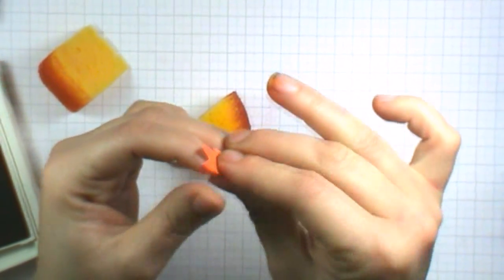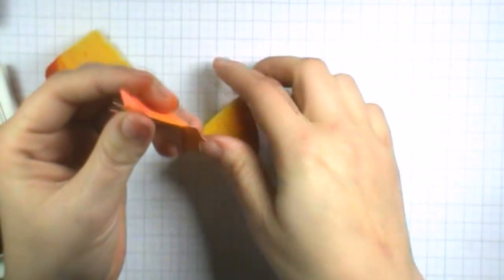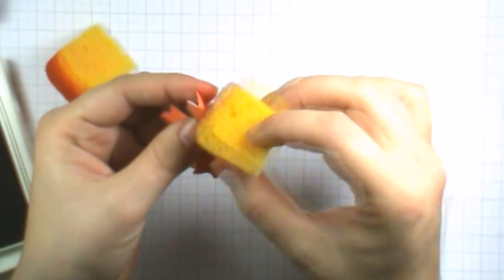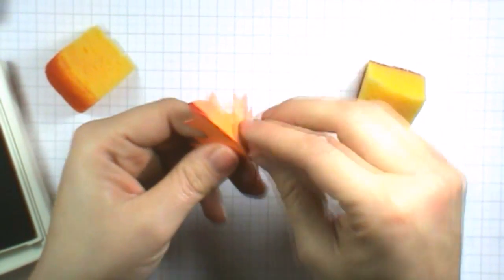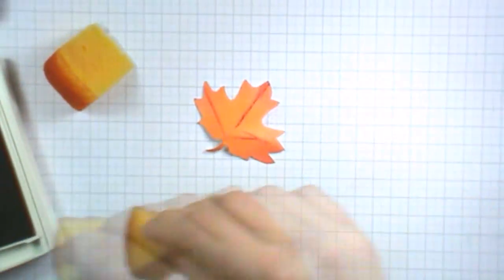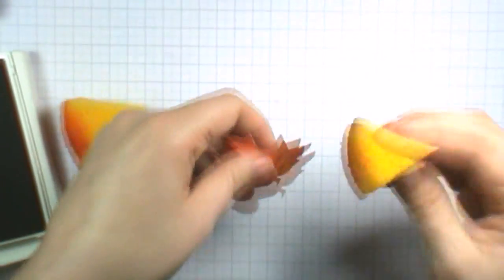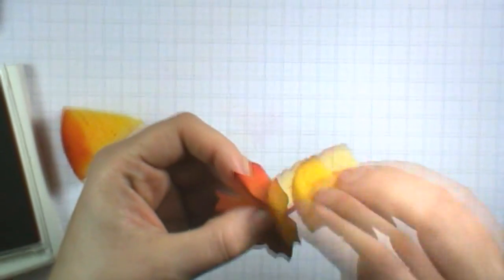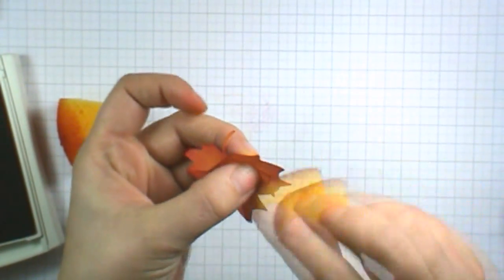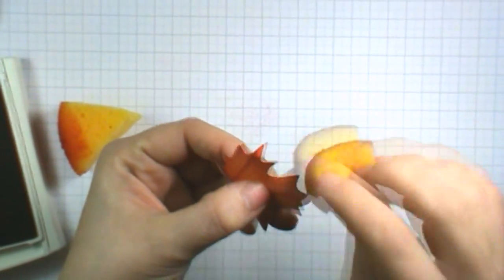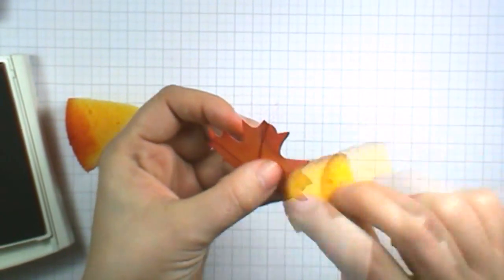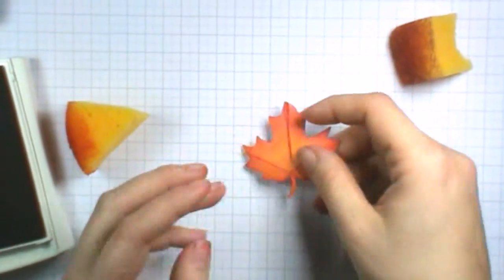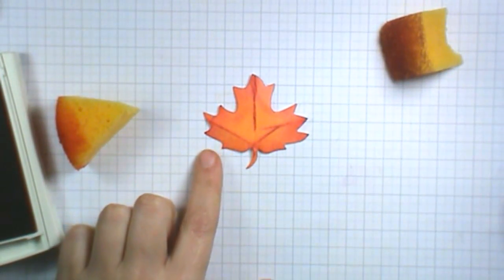And that just gives it a little bit more character. Now we are going to ink around the edges in Cherry Cobbler as well. You just have to do this pretty rough. And there we have our leaf.